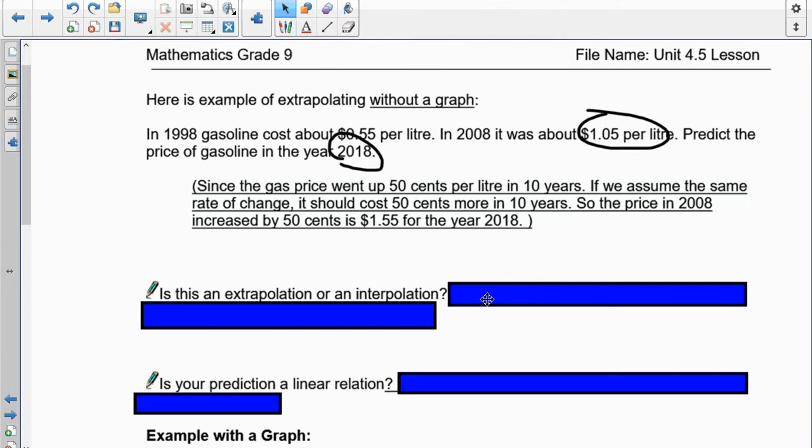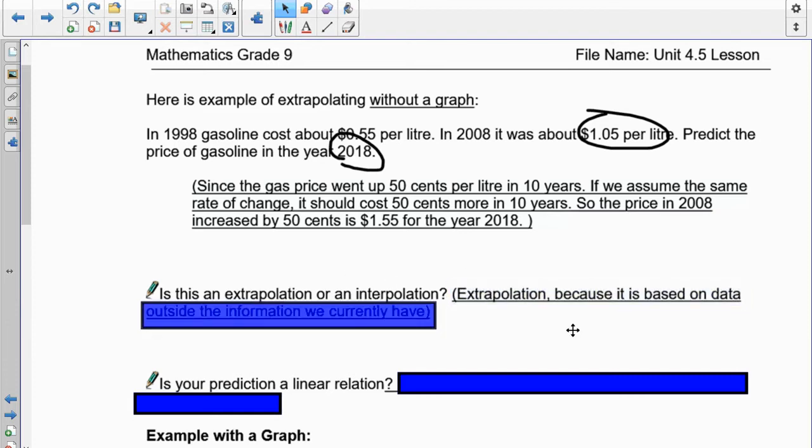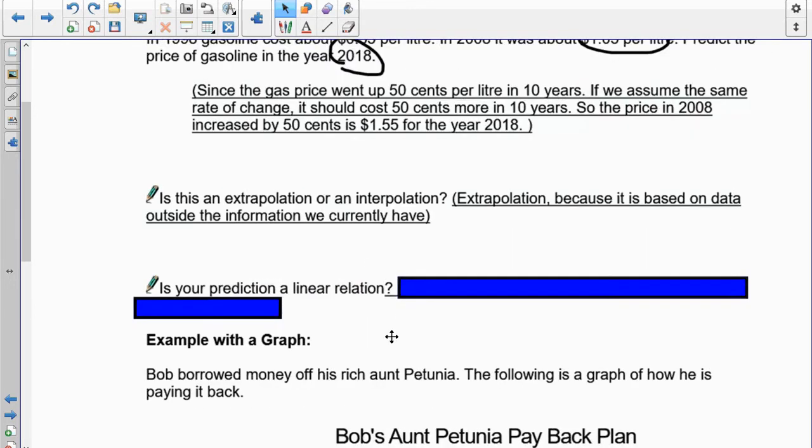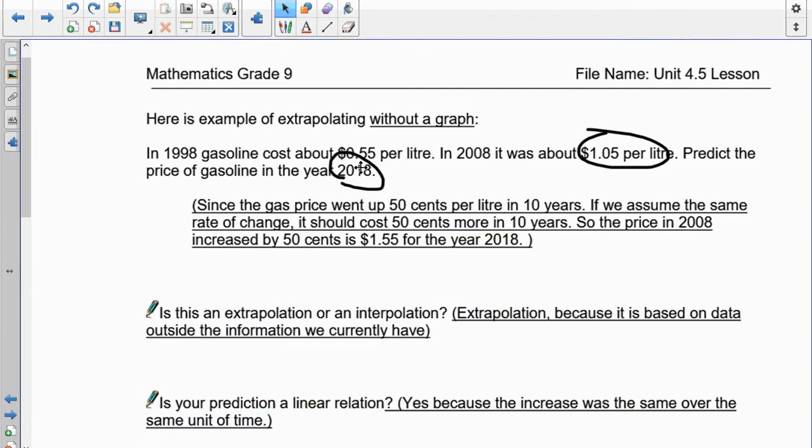So, is this an interpolation or an extrapolation? Well, the internal data would be 0.55 here and 1.05 there. So, we have from 0.55 or 55 cents in 1998 to $1.05 in 2008. This is internal here, but we've gone and we want to know what about 2018. So, in this case, it's outside the data. So, this is what we would call an extrapolation. Now, is our prediction linear? Yes, it is. Simply because we are going to increase by, it says here we increase by 50 cents each 10 years. So, 5 cents a year as you go up.